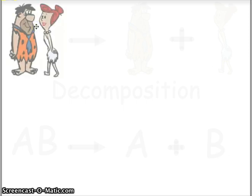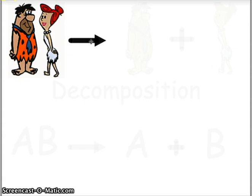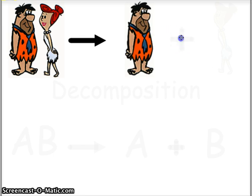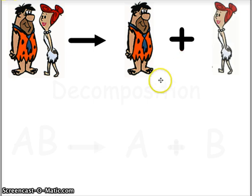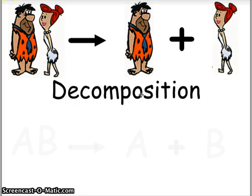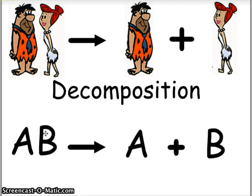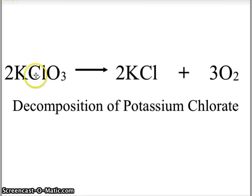Now if we have the Flintstones and they have a heated argument and decide to break up — Fred goes on his own while Wilma goes on her own — this is known as decomposition: to break down, to take apart. So AB yields A and B. When potassium chlorate, KClO₃, is heated, it breaks down and becomes potassium chloride and releases oxygen gas. This is the decomposition of potassium chlorate.